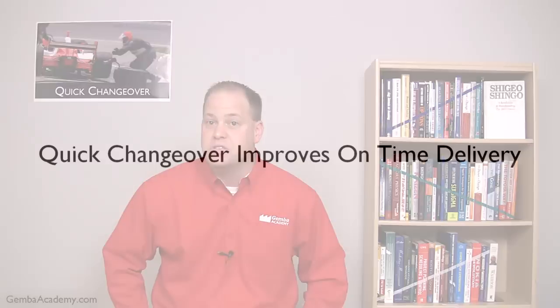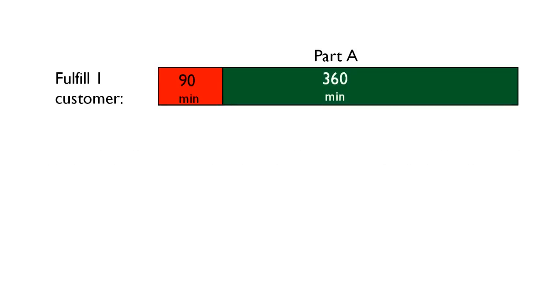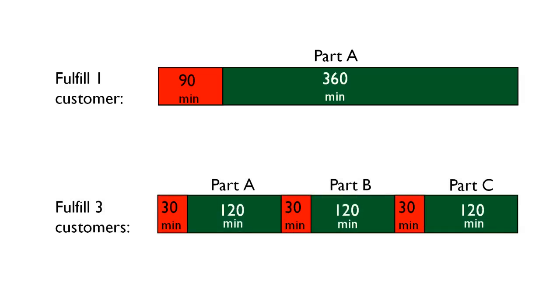Next, as a result of this improved flexibility and reduced lead time, quick changeover also improves on-time delivery performance. Let's say a company is plagued with an extremely long changeover of 90 minutes and, as such, once they finally get their machine set up and ready to go, they decide to run for 360 minutes in order to absorb as much of the changeover as possible. Now let's look at what happens when this 90-minute changeover is reduced to 30 minutes. The company is able to run smaller lots while also producing three different parts, which could easily mean they're serving three different customers. In other words, the customer that orders some Part C's no longer has to wait several days for their parts. Now let's look at how quick changeover can lead to a dramatic reduction in inventory, which reduces inventory carrying costs and increases cash flow.